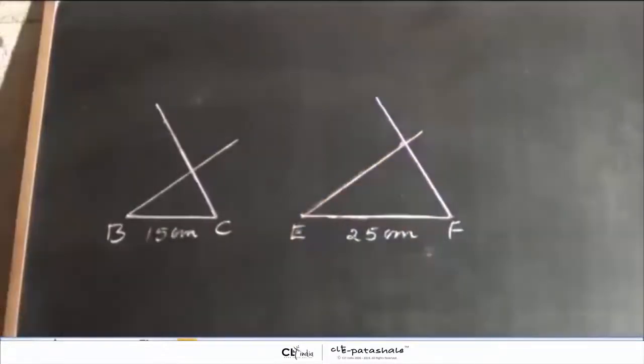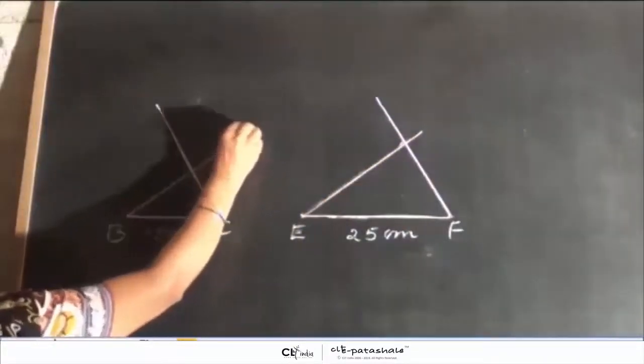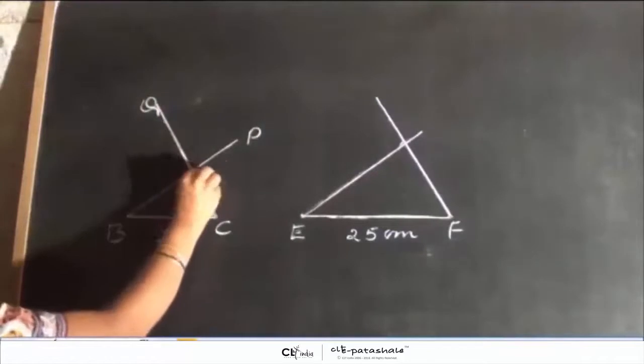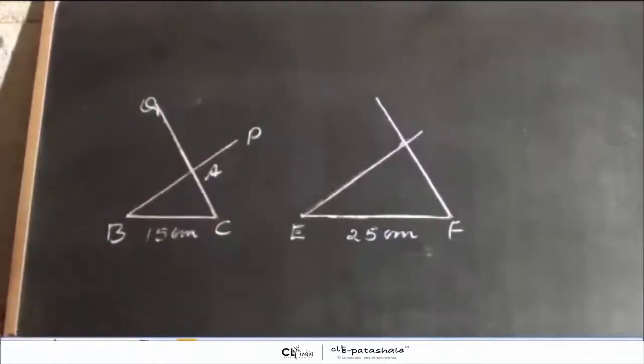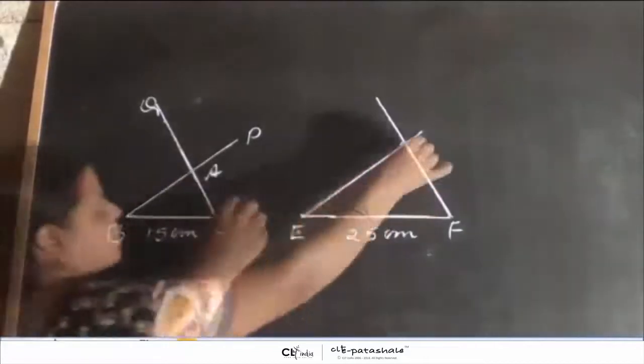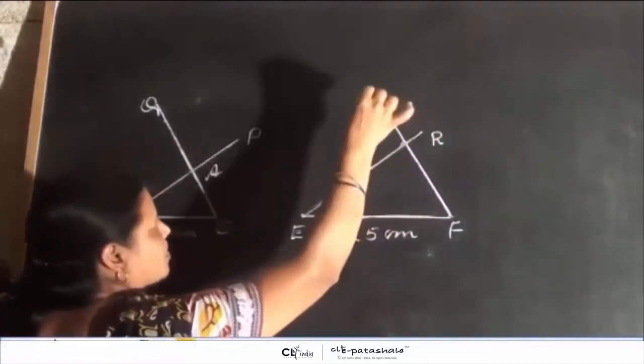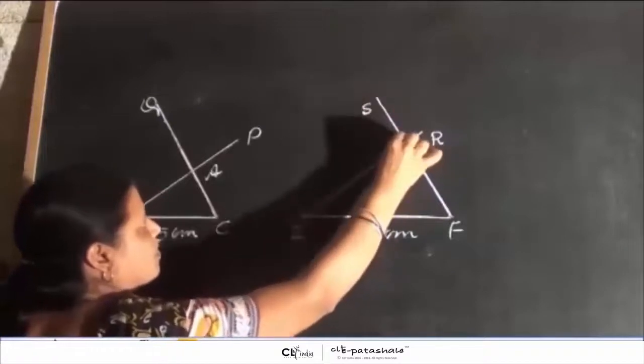Now, B, P and Q, C intersect at a point. We will name it as A. And E, R and F, S also intersect at a point which we will name it as D.